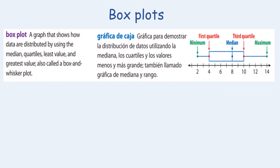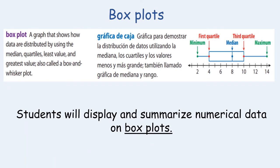The next part of our lesson focuses on box plots. A box plot is a graph that shows how data are distributed by using the median, quartiles, least value, and greatest value — also called a box and whisker plot. If you look at the image on the right, you will see an example. Remember, our outcome is that we will be able to display and summarize numerical data on box plots.